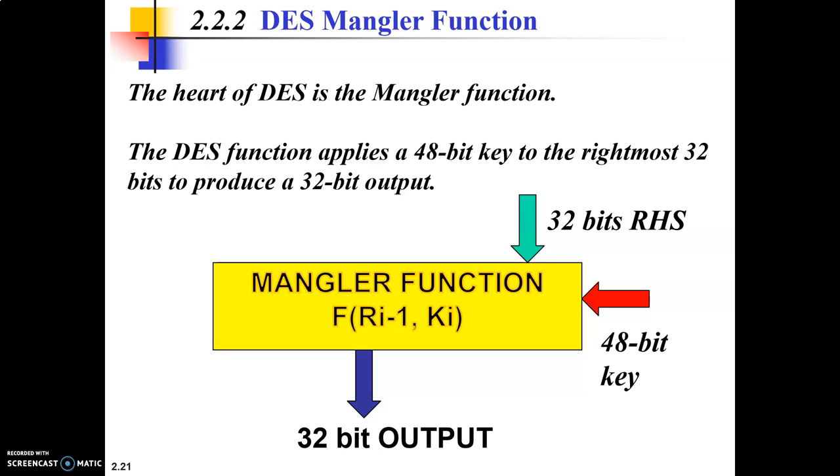Now let's talk about the DES Mangler Function. This function takes two inputs. One is a 32-bit right hand side and another is the 48-bit key, and it delivers an output of 32-bits.